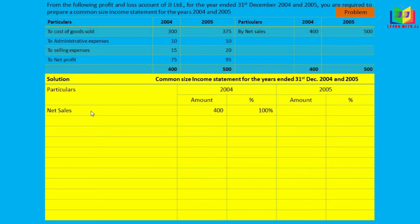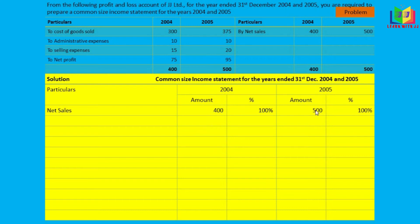First we start with net sales. For 2004, net sales is 400. To find the percentage: 400 divided by 400 equals 100%. We take 400 as the base for all 2004 figures. For 2005, net sales is 500, so 500 divided by 500 equals 100%, and 500 is the base for all 2005 figures.